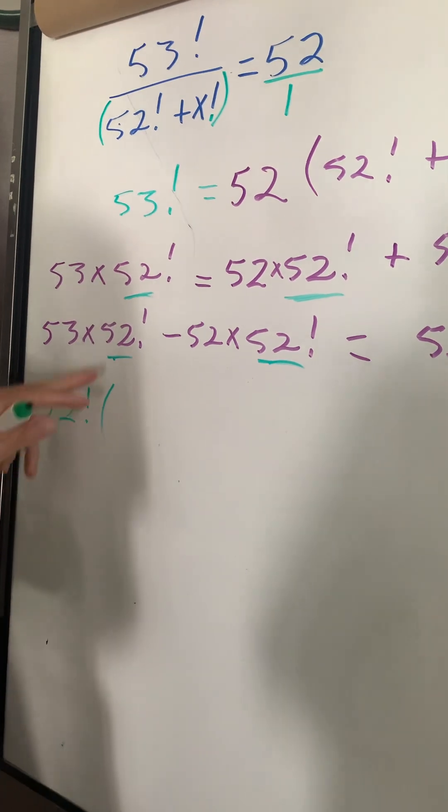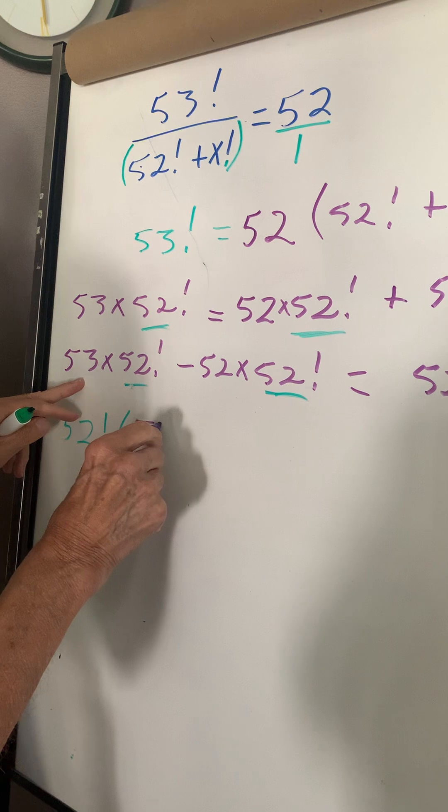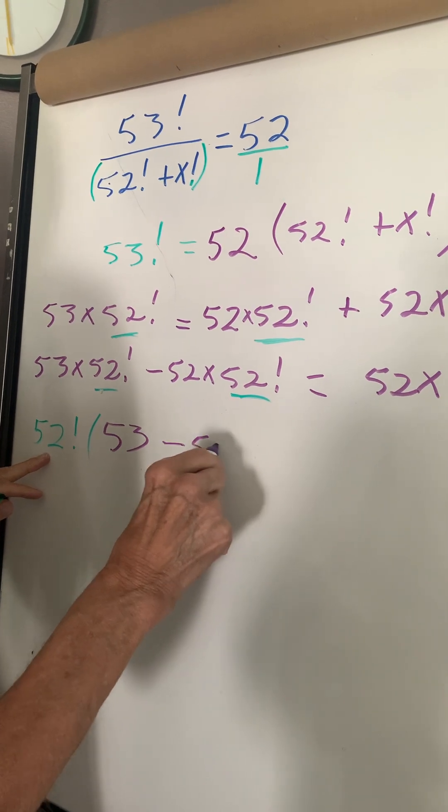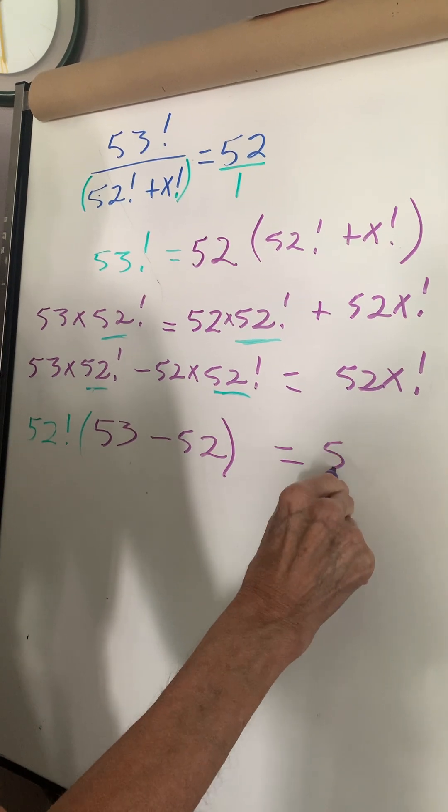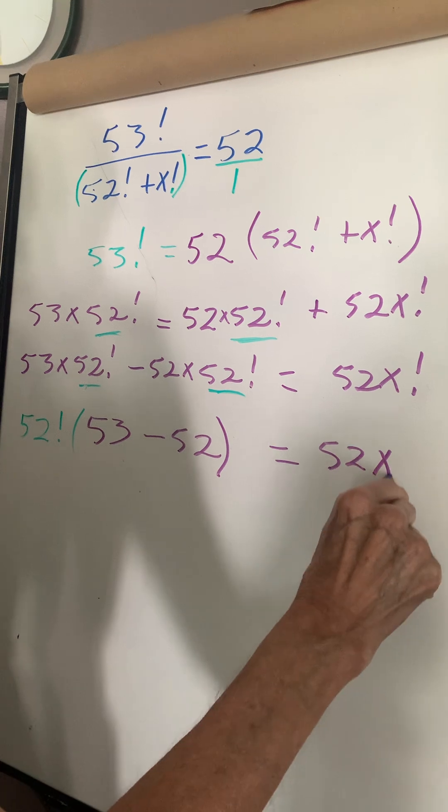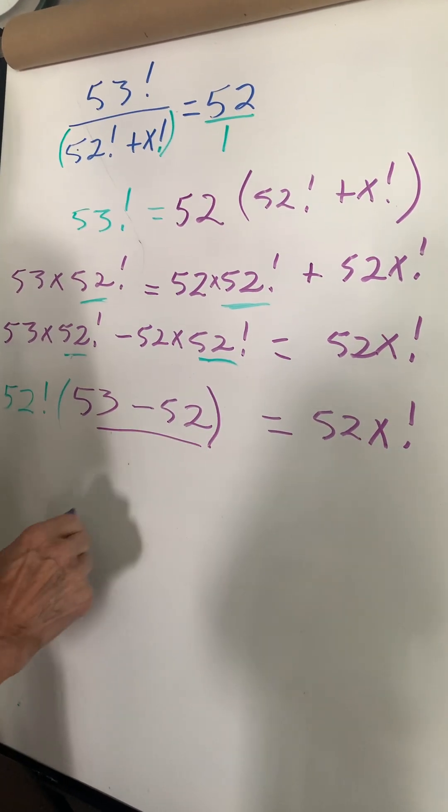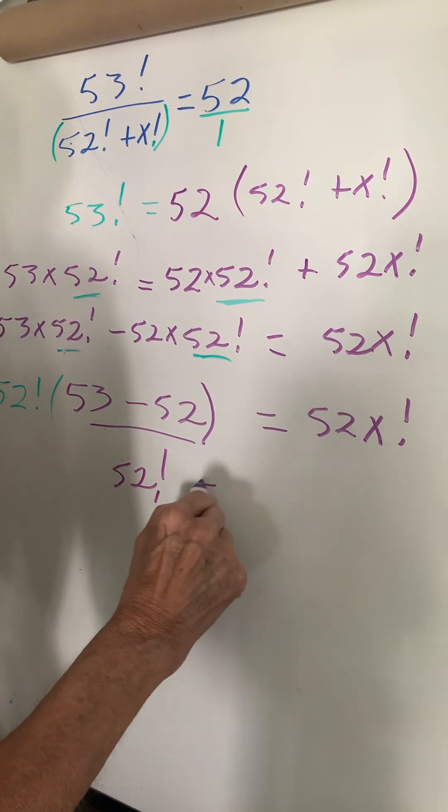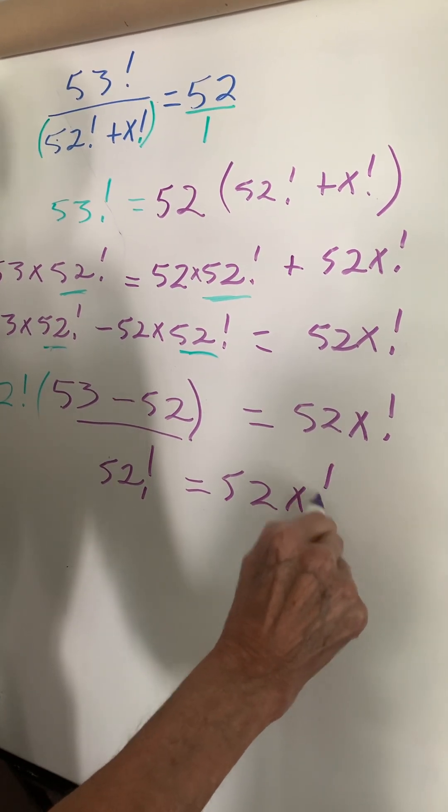52 factorial. And this goes into this, I'm left with 53. And 52 goes into that, I'm left with minus 52 equals 52 x factorial. This equals 1. So I'm left with 52 factorial equals 52 times x factorial.